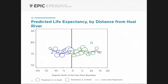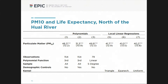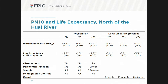Another test: taking all the covariates in the data and predicting life expectancy excluding PM — does it look different north versus south? It looks slightly different, but it is statistically not meaningful. And a table showing different implementations of these regression discontinuity designs largely gives the same answer for both PM10 and life expectancy.